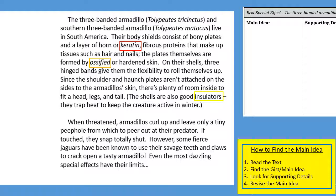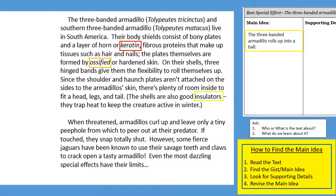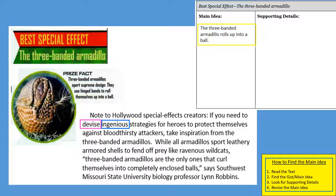Now that you've read through the text, write down the gist or the main idea. The text is about the three-banded armadillo and what we learn is that it can roll up into a ball — that's the gist statement to start with. Now we go back and find supporting details: armadillos sport leathery armored shells to fend off prey. Pause the video to complete this in the article and in your purple workbook.